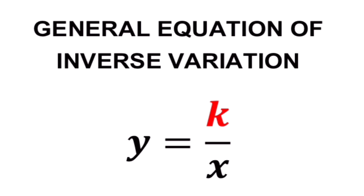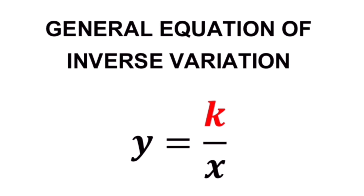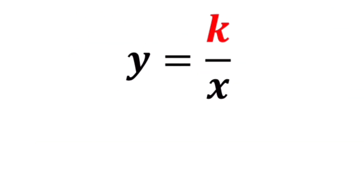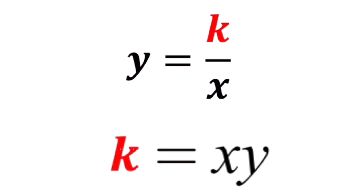We also remember that the general equation for an inverse variation is y equals k over x, where k is called the proportionality constant. To determine the constant of variation k for an inverse variation, we can rearrange this equation as k equals x times y.